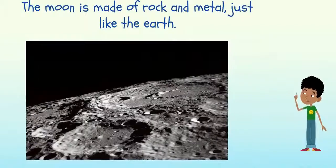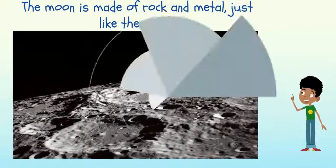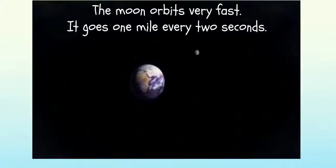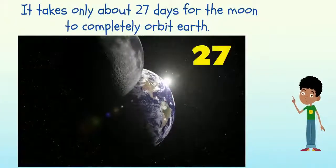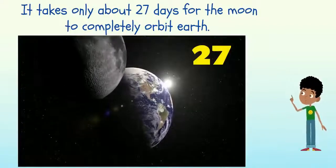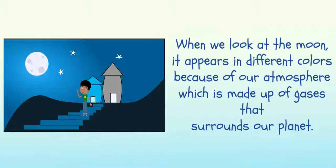The moon is made of rock and metal, just like the Earth. The moon orbits very fast—it goes one mile every two seconds. It takes only about 27 days for the moon to completely orbit the Earth.